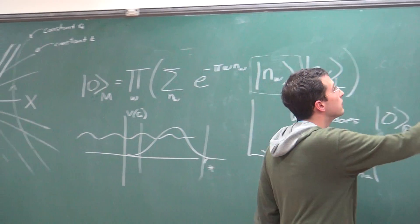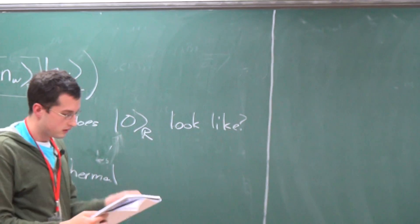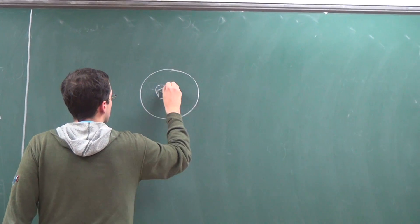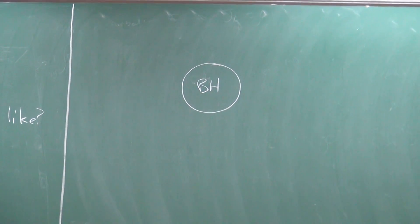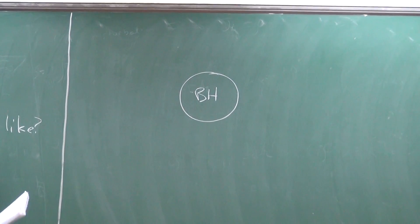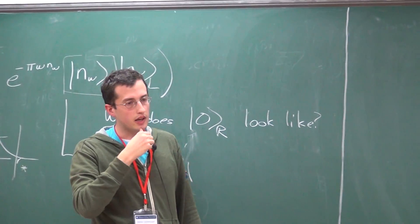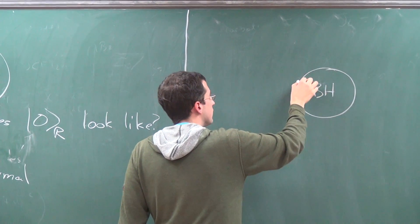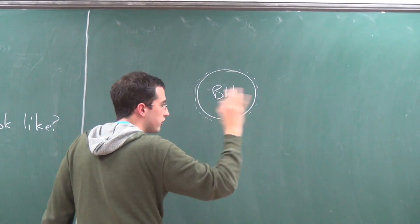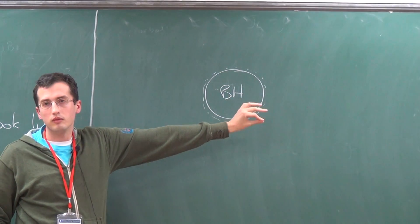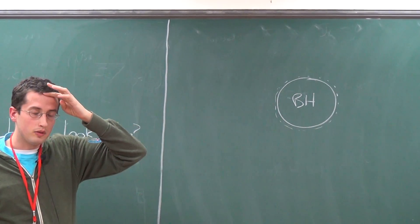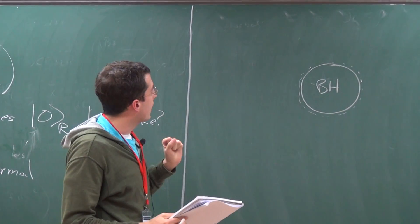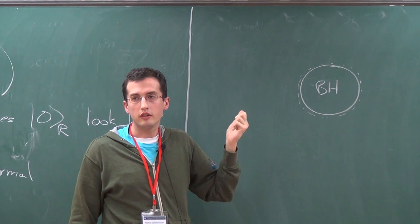Let's go back to black holes. I want to revise the cartoon picture of a black hole, looking at it from the outside, based on our new understanding of black holes as warm objects. Yesterday I said that if you looked at a black hole classically, you would see all the stuff on its way in kind of pancaked near the horizon. But if you trusted the classical geometry without knowing about Hawking radiation, you might think that's fine. Actually, if you looked at a real black hole, that's not what you would see, because it's warm.